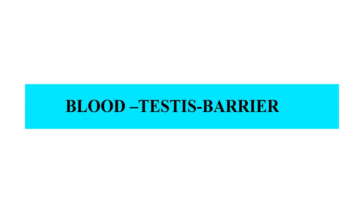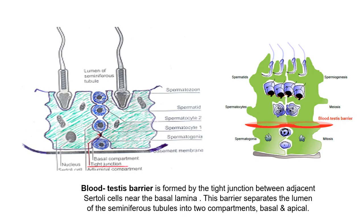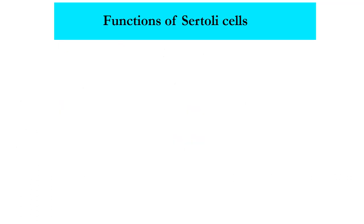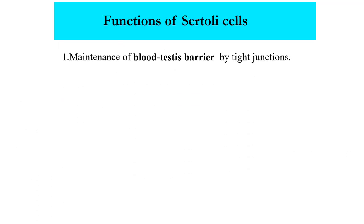After covering the functional anatomy of the male reproductive system, our next topic is the blood-testis barrier. The wall of seminiferous tubules is lined by primitive germ cells and Sertoli cells. Sertoli cells are large complex glycogen-containing cells that stretch from the basal lamina of the tubule to the lumen. The tight junctions between adjacent Sertoli cells form the blood-testis barrier, which separates the lumen of the seminiferous tubules into two compartments: basal and apical.